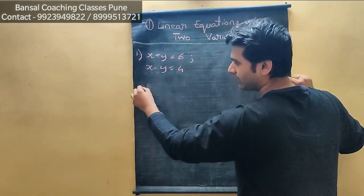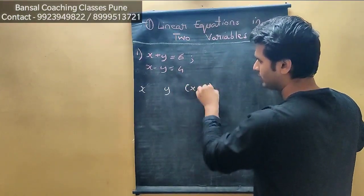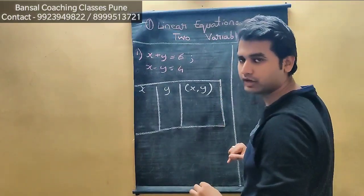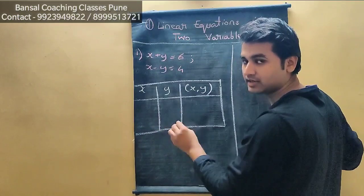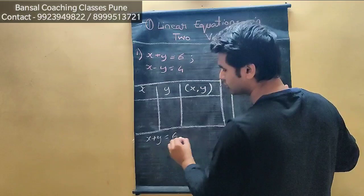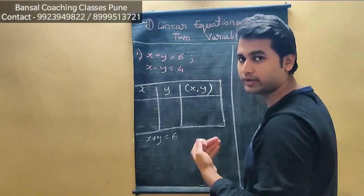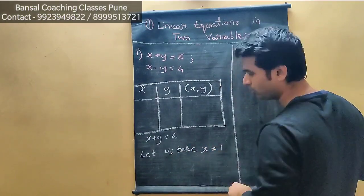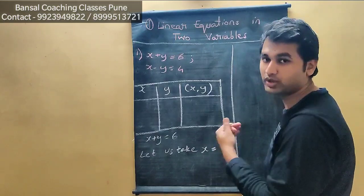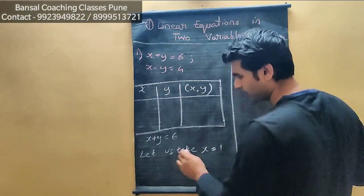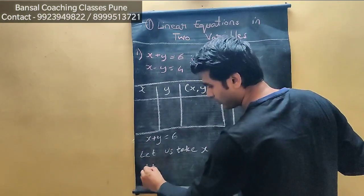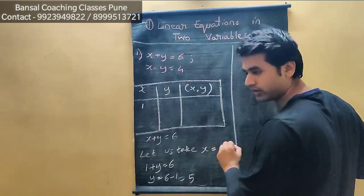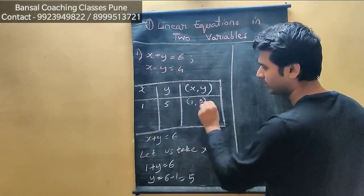For the first equation, I'll write the terms x, y. We have to find 3 values. Now, first equation is x plus y is equal to 6. Let us assume x is equal to 1 — you can assume any value: 0, negative, that depends on you. So substituting x=1: 1 plus y equals 6, therefore y equals 5. So our first point is (1, 5).